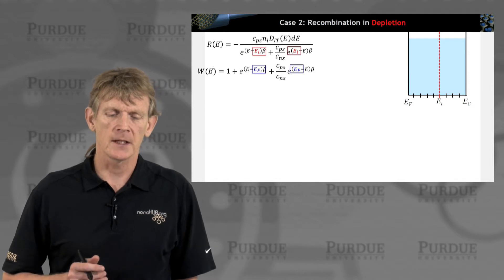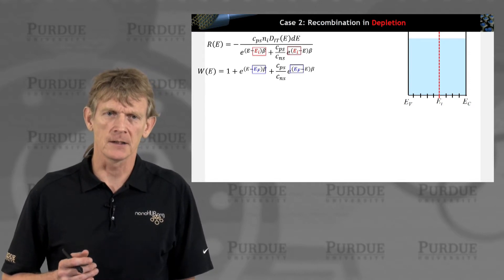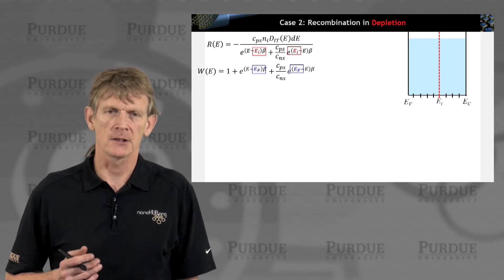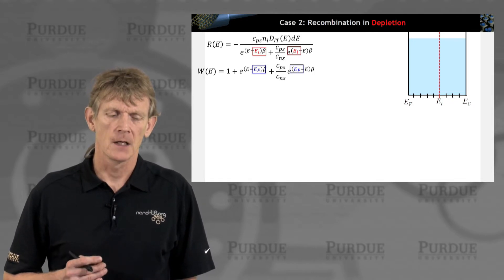But here the exponentials have the intrinsic level in it rather than some Fermi levels that we had in the minority carrier recombination.